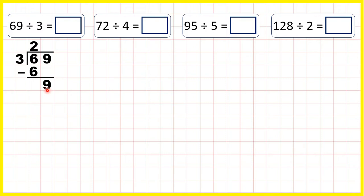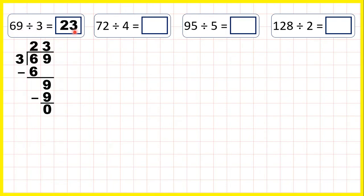Now again, 9 is in the 3 times table, so we can write minus 9 under the 9, and because 9 is 3 times 3, we have 3 as the final digit of our answer line, and we can subtract to show that we don't have a remainder. So 69 divided by 3 is 23.